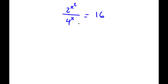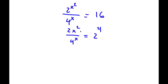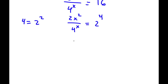Alright, so I have 2 to the power of x squared over 4 to the power of x is equal to 16. Now 16 equals 2 to the power of 4. So I have 2 to the power of x squared over 4 to the power of x equals 2 to the power of 4. I'm trying to express everything in base 2. The only term remaining is 4 to the power of x, and 4 is the same thing as 2 squared. So I replace 4 with 2 squared, giving 2 to the power of x squared over 2 squared to the power of x equals 2 to the power of 4.